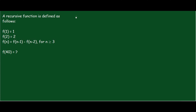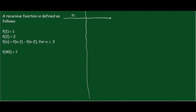This is a recursive function, which means we need to know what the previous term was before we know what the next term will be. The best way to solve this problem is by using a table.